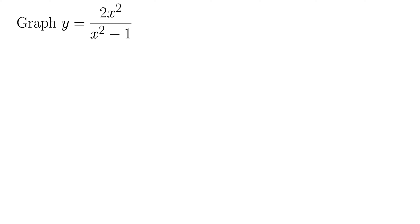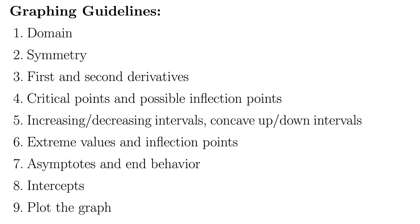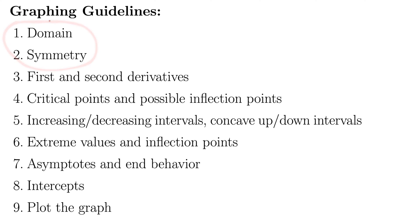In this example, we want to graph a rational function, y equals 2x squared over x squared minus 1. Let's check in with all the different steps we need to use for our analysis of these graphing problems in order to get the graph completed. Let's begin by focusing on domain and symmetry, and then we'll come back and do all the other steps.